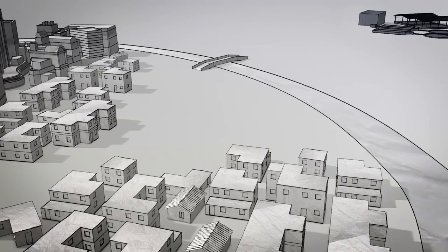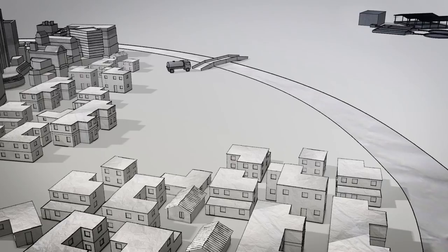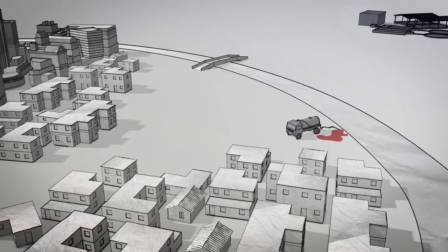In another city, a treatment plant was built so far outside of town that truck drivers could not afford to transport sludge that far. Because land for treatment is difficult to find in dense urban areas, the result was that it was never used and trucks continued to dump sludge directly in the urban environment. Both of these examples illustrate the importance of always designing and planning fecal sludge management solutions based on the local context.